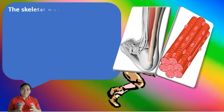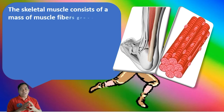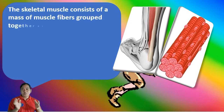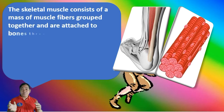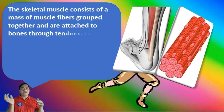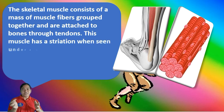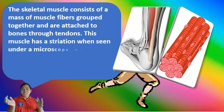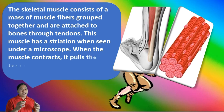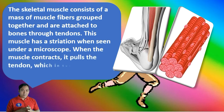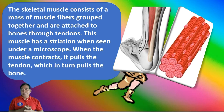The skeletal muscle consists of a mass of muscle fibers grouped together and attached to the bones through tendons. These muscles have striations when seen under a microscope. When the muscles contract, they pull the tendon, which in turn pulls the bone.